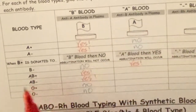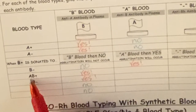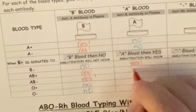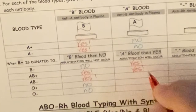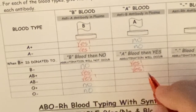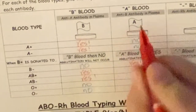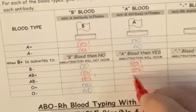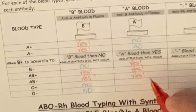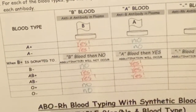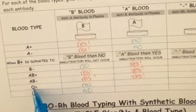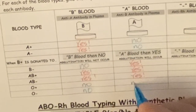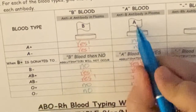For AB blood, the A is recognized as being the same, but B is considered foreign because of the anti-B antibody, so it'll be marked for destruction — yes, some agglutination will occur. A is recognized as A blood, but the B causes agglutination. For O, our ninja can always go anywhere, so no agglutination will occur.